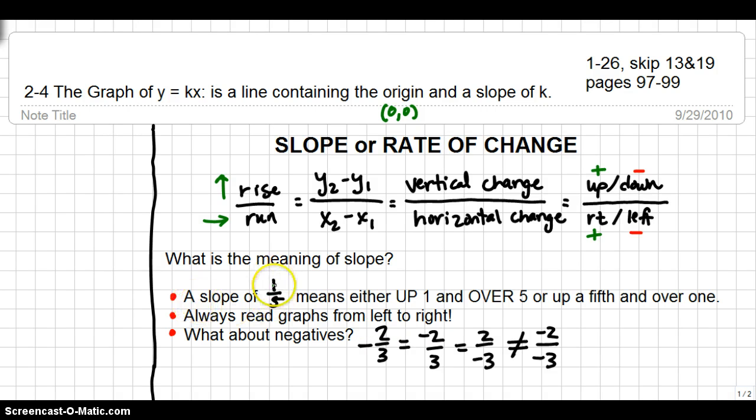If you end up with a slope of a fraction like 1 fifth, it either means you'll go up 1 and over 5. When you're working with a graph of y equals kx, know that the slope of the line will be consistent. If you're working with a graph that's got many different slopes, we refer to those as rates of change.